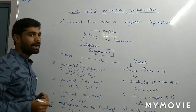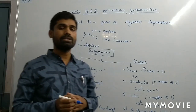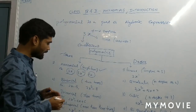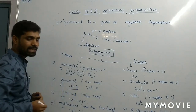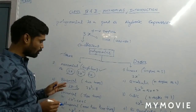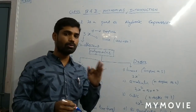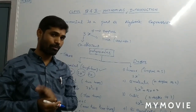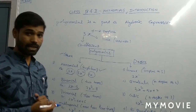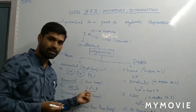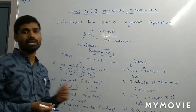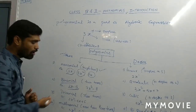Now let us come to the binomial. Binomial is nothing but which has two terms. An expression which has two terms is called a binomial. For example, 2x minus 5 — here 2x is one term and 5 is another term, so it consists of two terms, and it is called a binomial. One more example: 7x power 3 minus 8. Here also we can see two terms — 7x power 3 is one term and 8 is another term. So it is called a binomial.